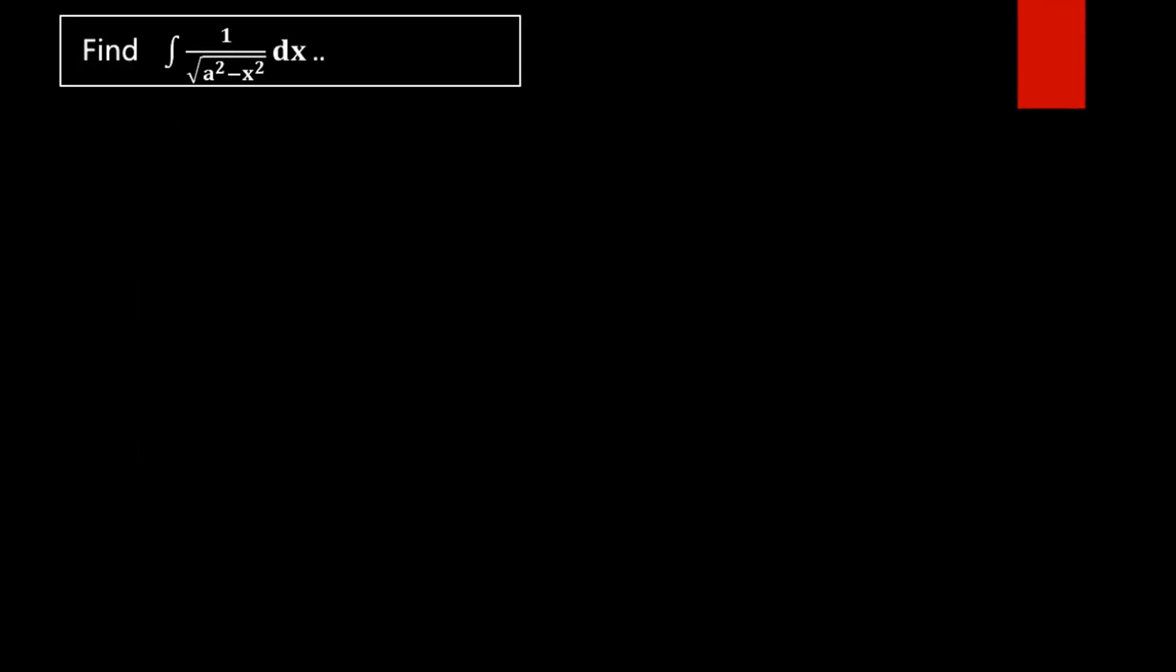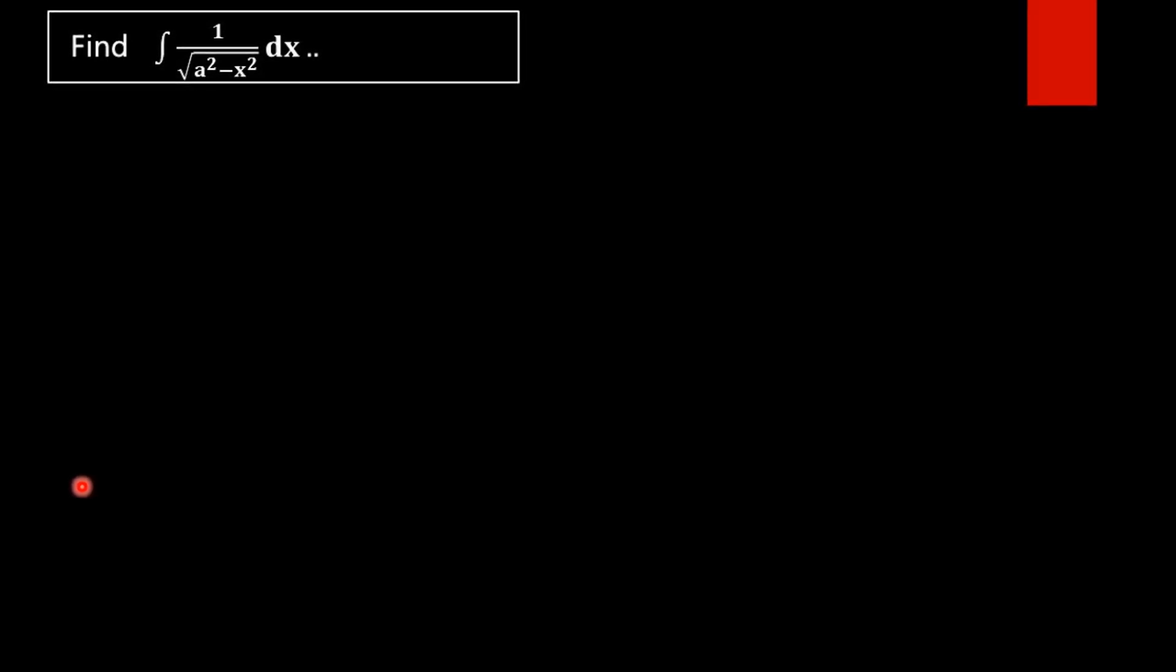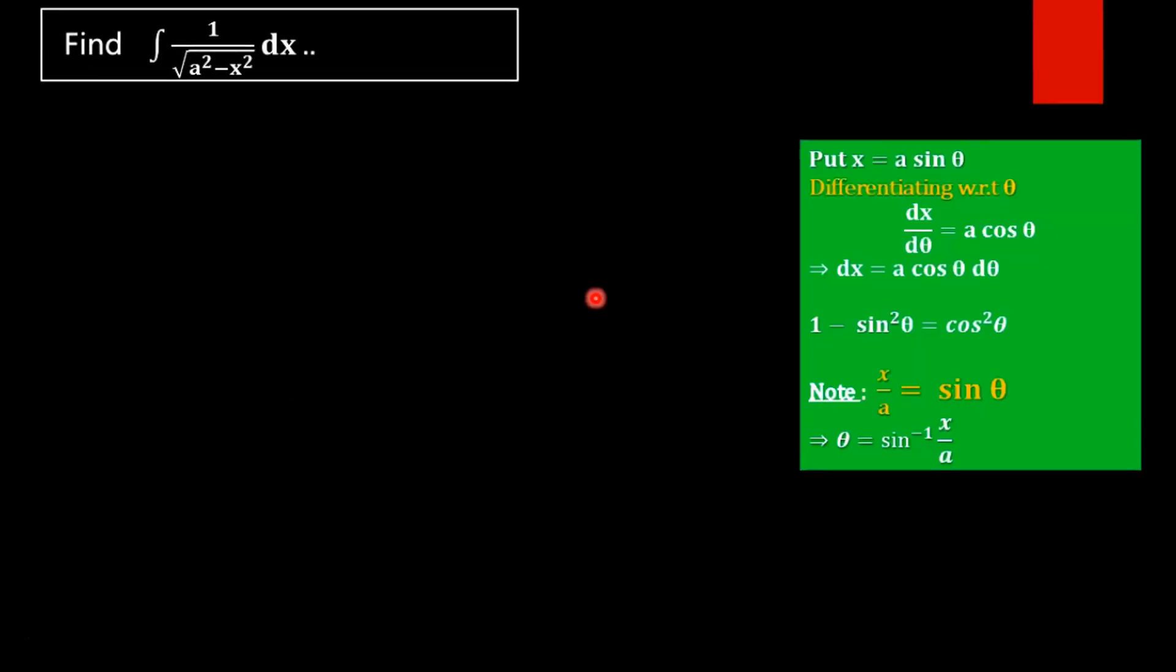We have to find the value of integral 1 divided by square root of a square minus x square dx. The function is not in an integrable form, so in order to make the function into an integrable form, we are going to use the substitution method, i.e., we are substituting x equal to a sin theta.